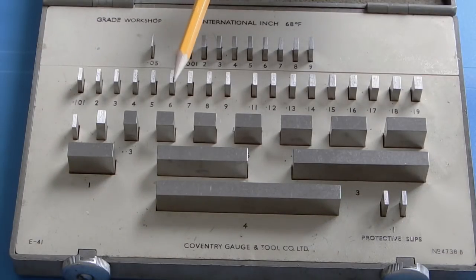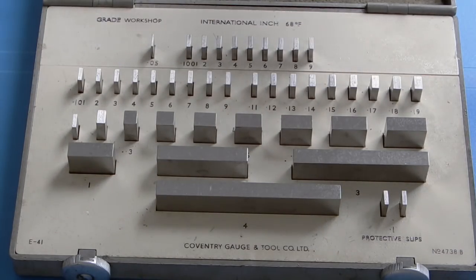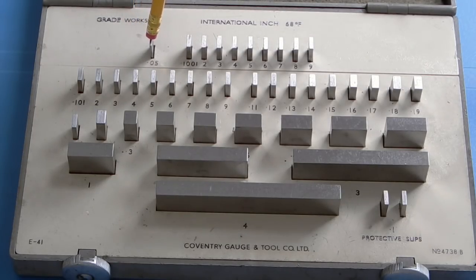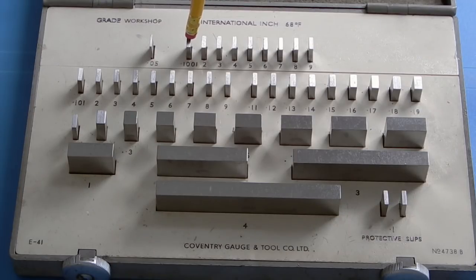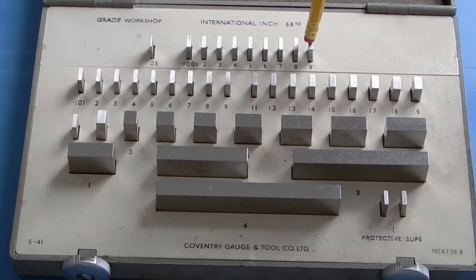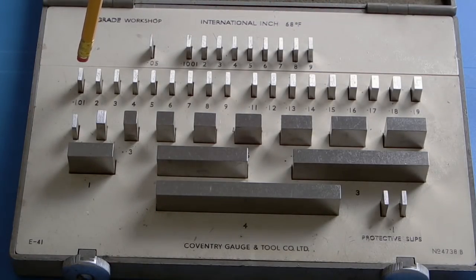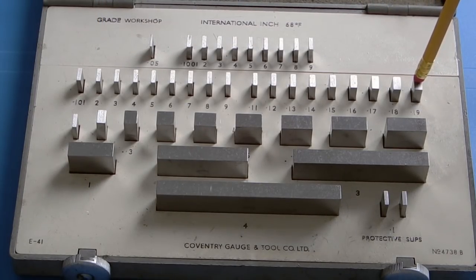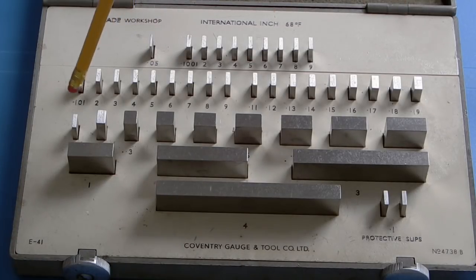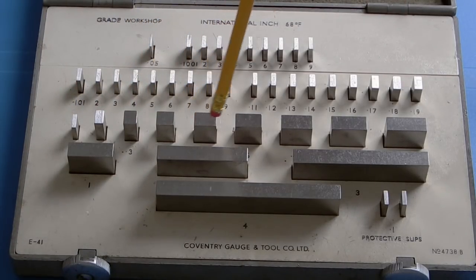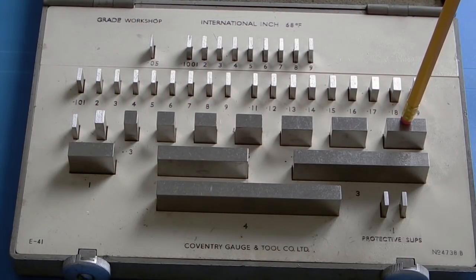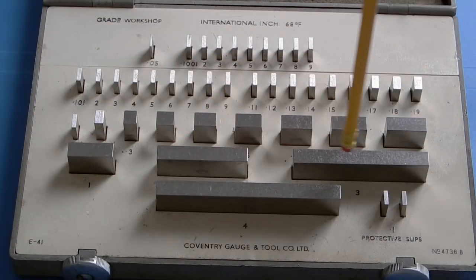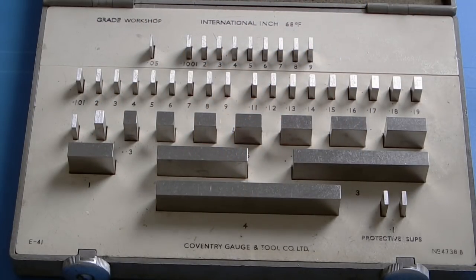Set of steel blocks, different sizes. They go from 0.05, these are all inches, 0.1 and a tenth up to nine tenths, then you've got 100 and a thou up to 19 thou, then you've got 0.1, 0.2, 0.3, 0.4 up to 0.9, then you've got 1 inch, 2 inch, 3 inch and a 4 inch, and these two are 0.1 protective slips.